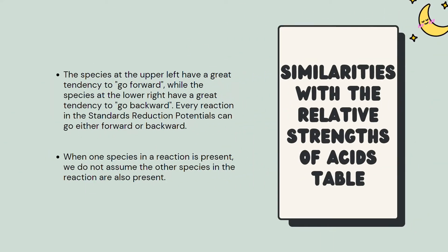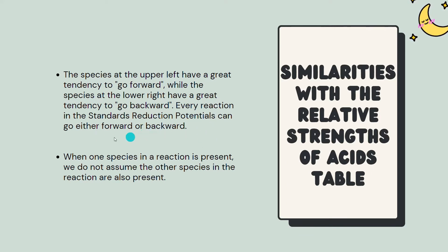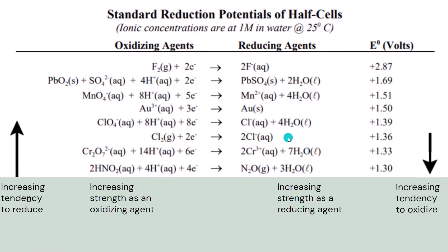Here are the similarities between the two tables. The species at the upper left have a great tendency to go forward, while the species at the lower right have a great tendency to go backward. Every reaction in the standard reduction potentials table can either go forward or backward, so even though there is only one arrow, the reaction can actually go backward.